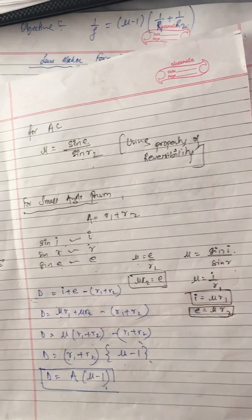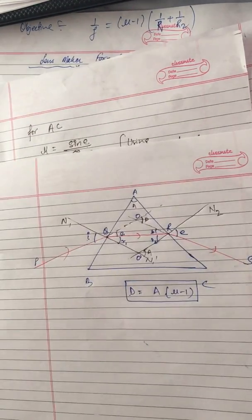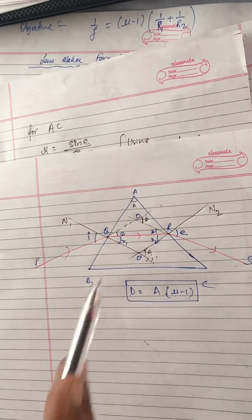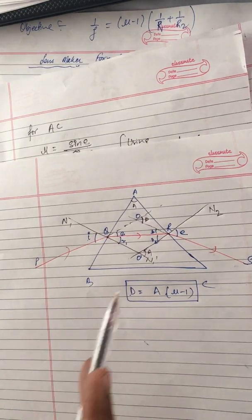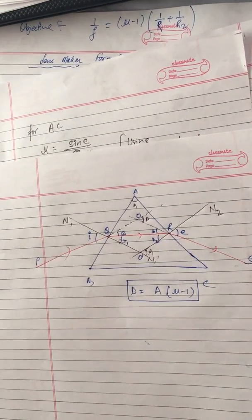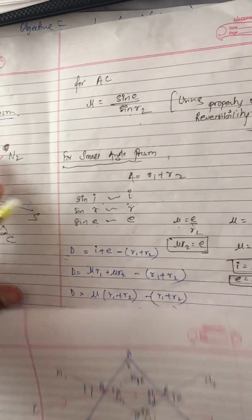For a small angle prism, A equals r1 plus r2, as you can see here in this figure. A is equal to r1 plus r2, which is the sum of the two opposite interior angles.